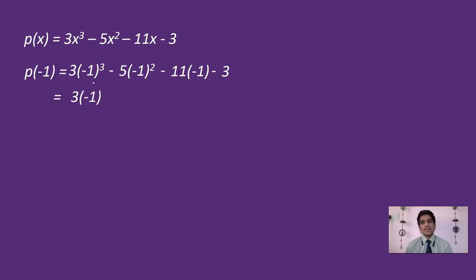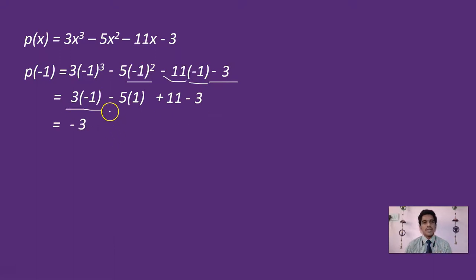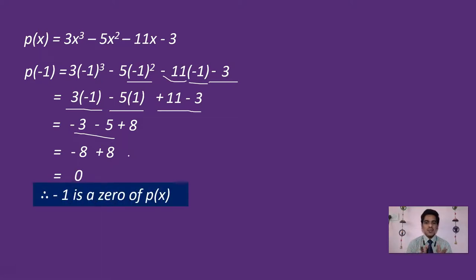So we have: 3×(-1) = -3, then -5×(1) = -5, then -11×(-1) = +11 (minus of minus is plus), and the constant is -3. So we get -3 - 5 + 11 - 3. That is -8 + 8 = 0. Since substituting x = -1 gives 0, minus 1 is a zero of the polynomial.